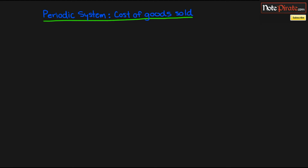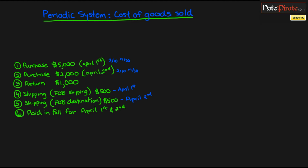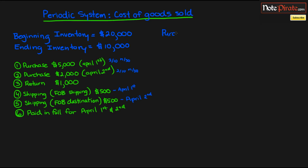Let's start off with some entries listed, and we will also have the beginning inventory and the ending inventory listed as well. So let's go ahead and actually journalize these entries. If we have a purchase for $5,000, it's going to be a purchase which is debited, accounts payable for $5,000 each.